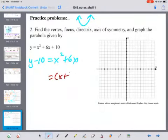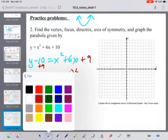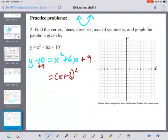So it's going to be x plus 3 squared, and in order to complete, I need to add 9. I need to add 9 to both sides, which means my left side is now going to be y minus 1.